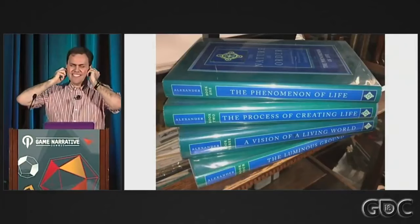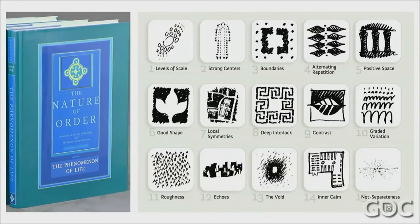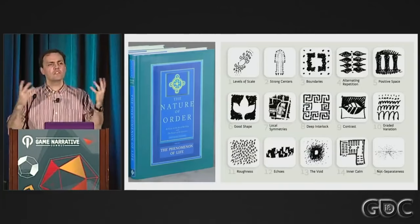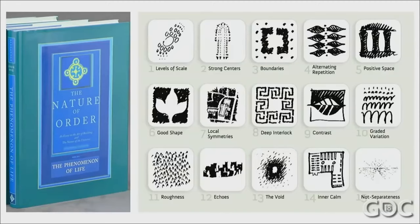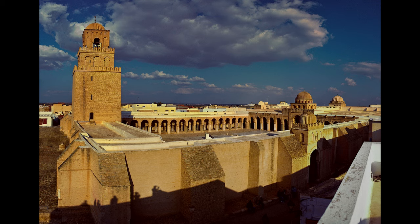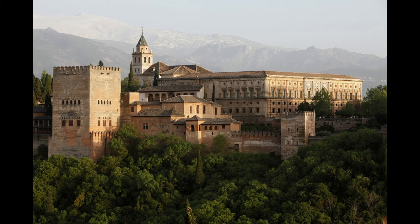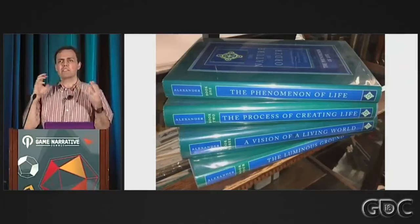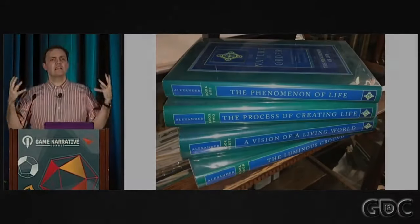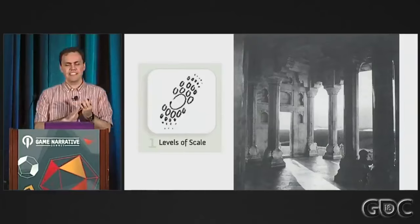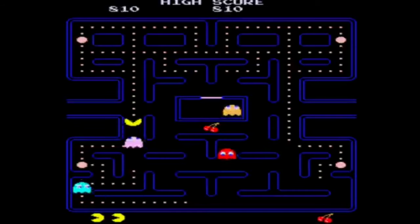How do we detect this ethereal force? This is where Christopher lays out an additional fifteen principles, and Schell takes this and translates it into our understanding of games. Alexander argues that these properties exist inherently in nature, and it's up to us to intuit these principles and apply them in design. He shows examples in the context of architecture — like how the mosque of Cairo shows principles of strong centers, or how the Alhambra has beautiful instances of scale and local symmetry. Since we are focusing on game design, we can illustrate these through Schell's interpretations. Scale is a property that reveals beauty at multiple resolutions, and can be seen in the layered design of Pac-Man to the quest you embark on in Shadow of the Colossus.